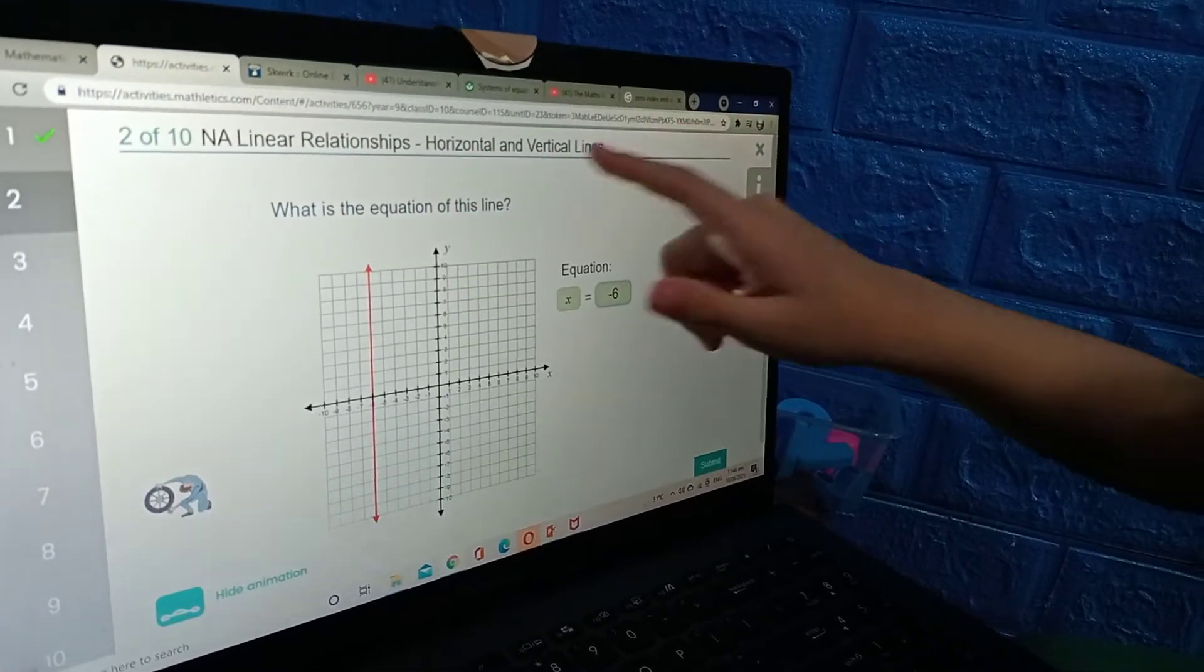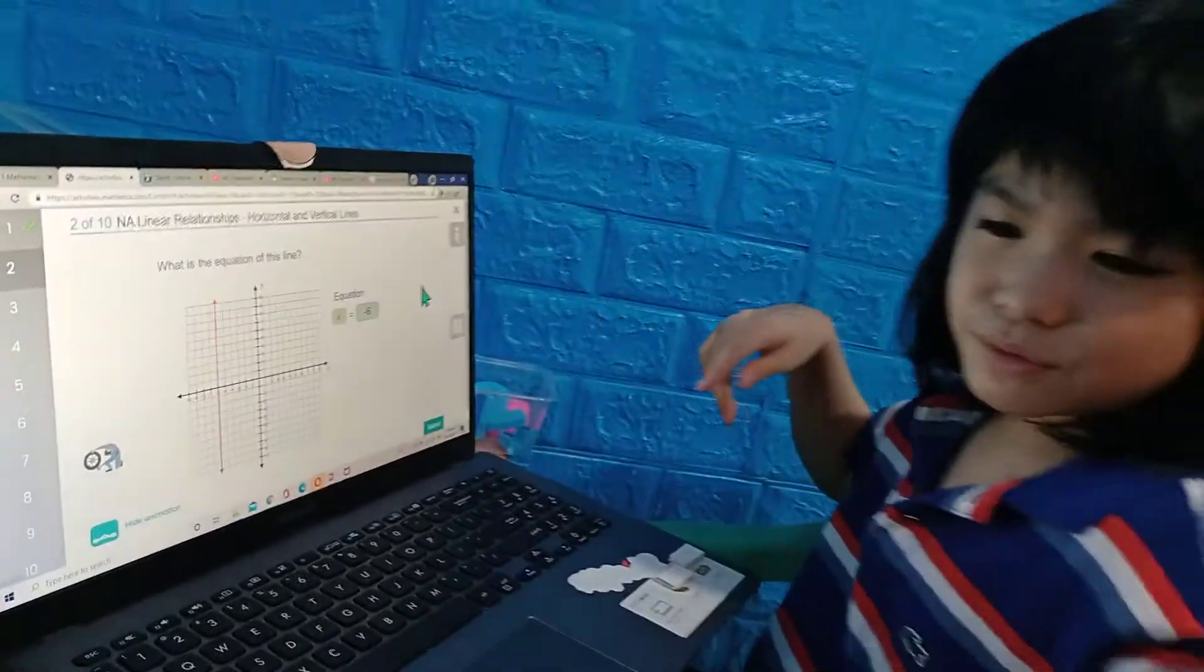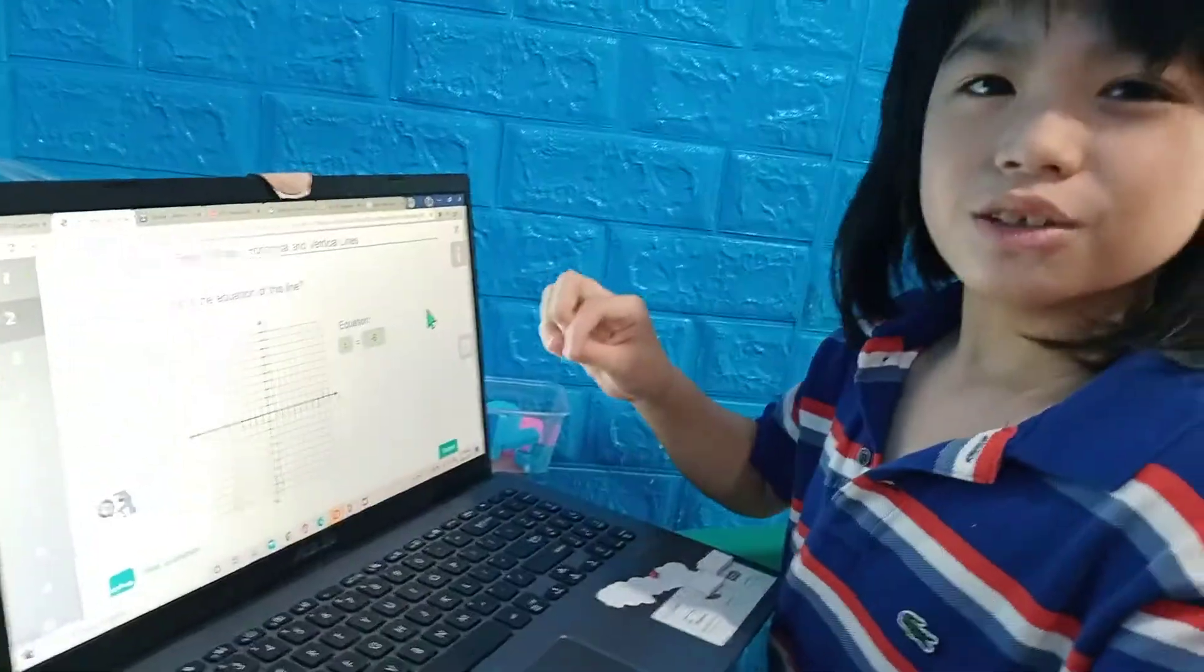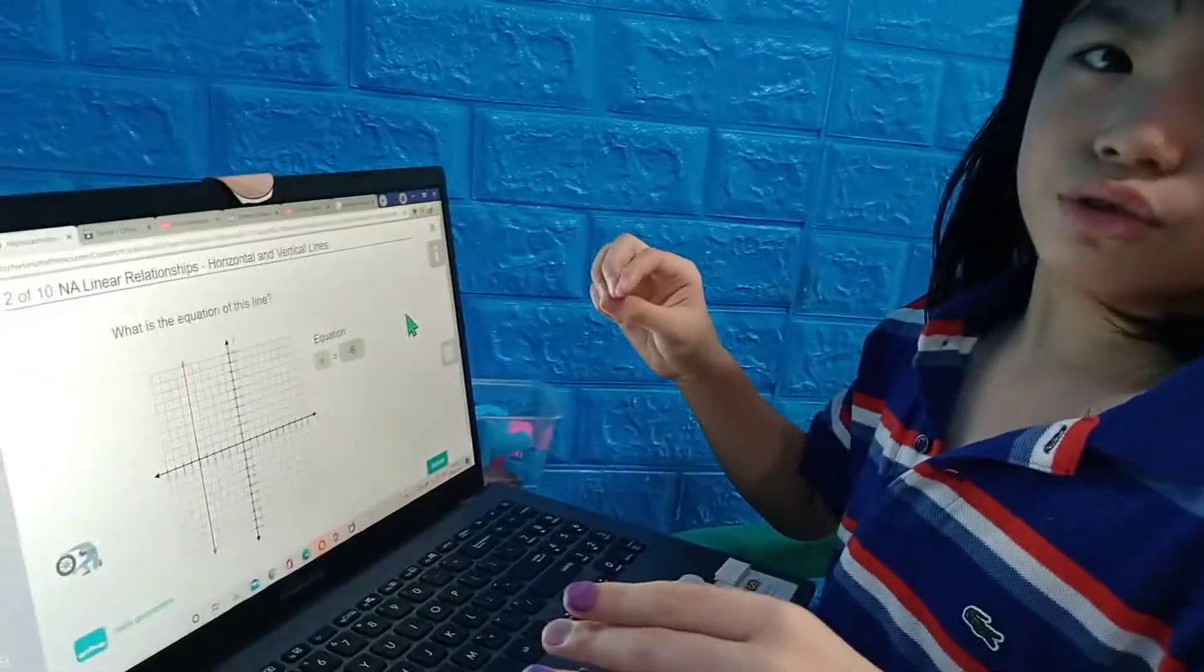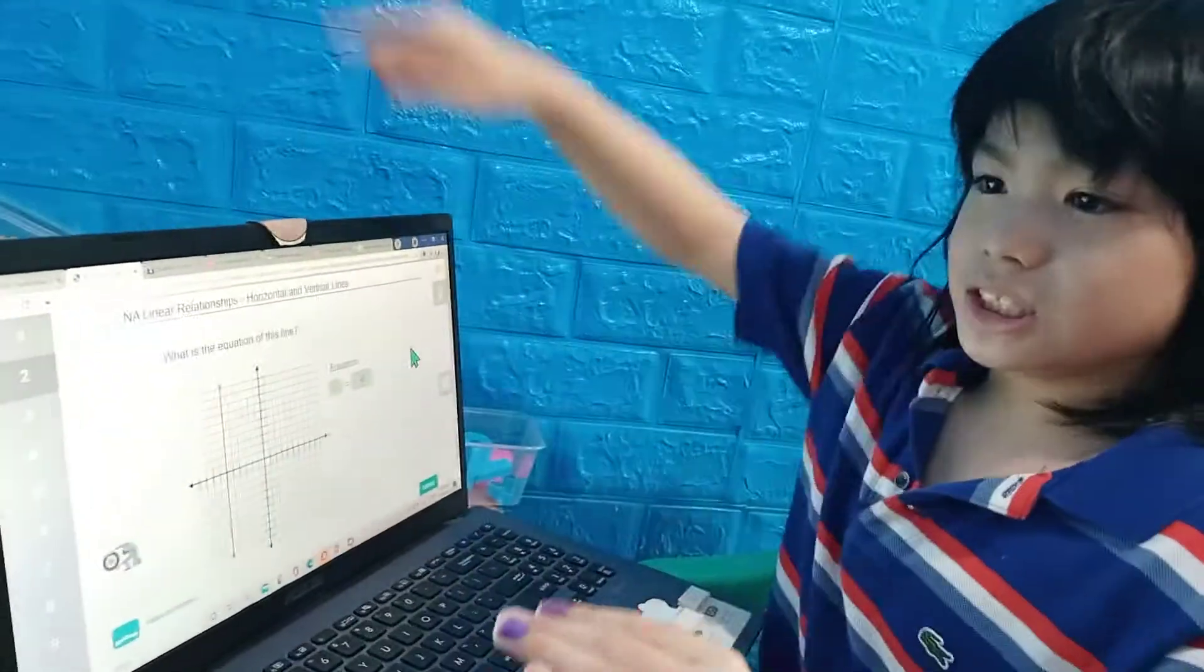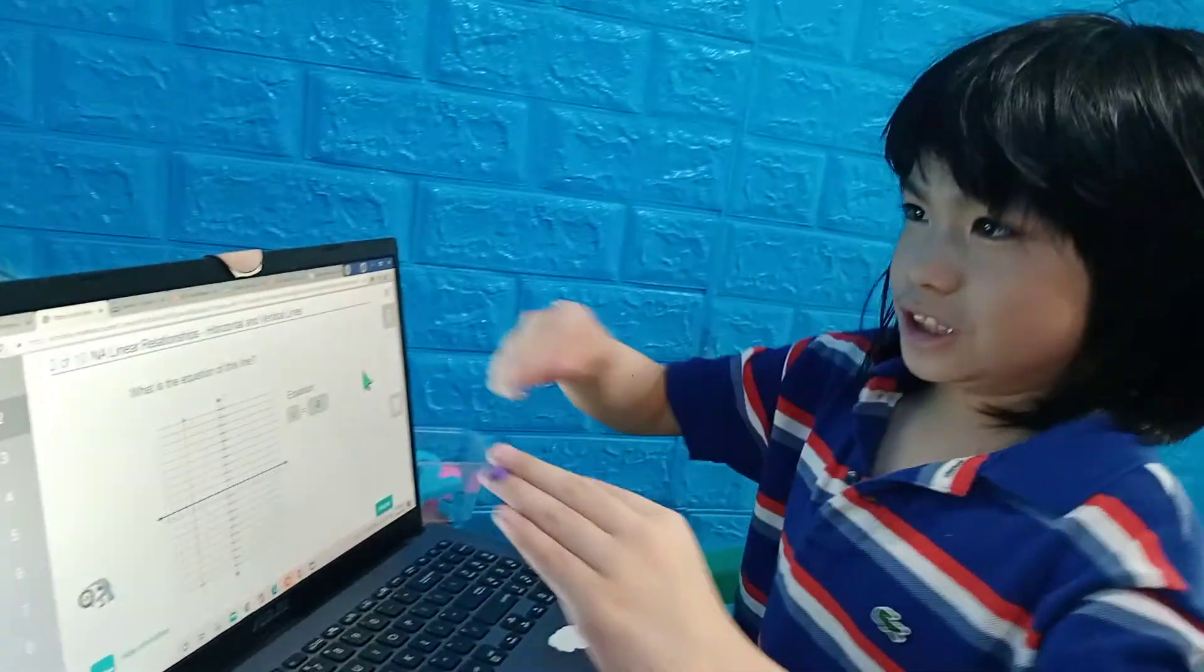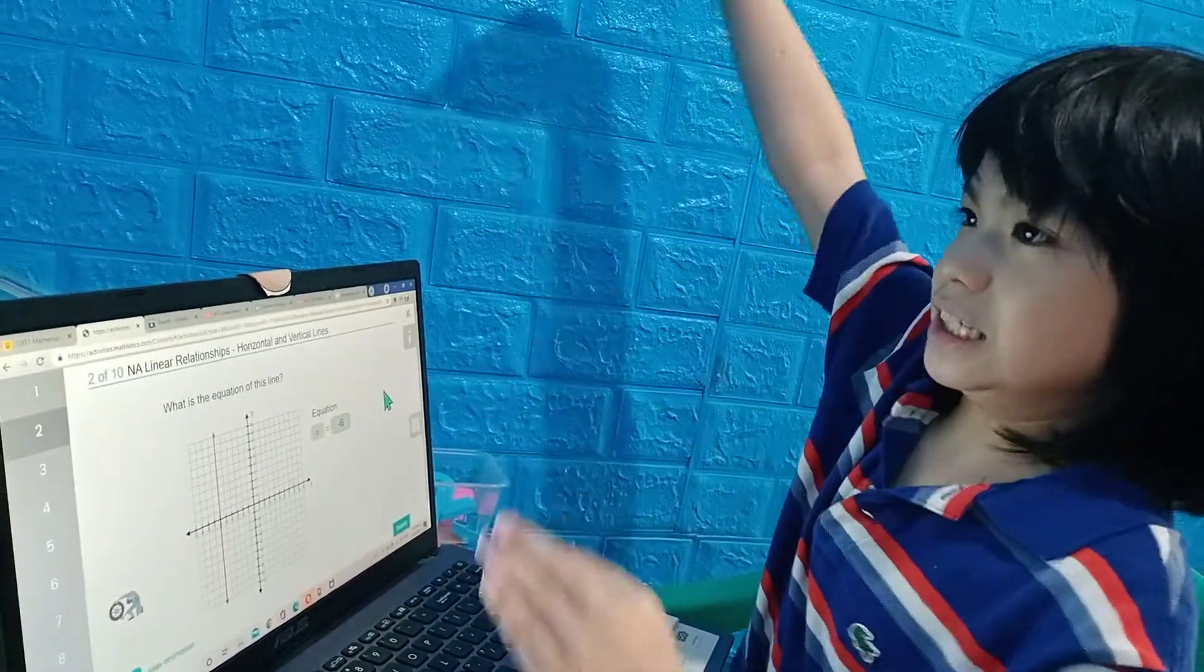So I've learned that y equals mx. For example, y equals 1x is just this example form. Y equals 0x is just a straight line. Y equals 1x is a diagonal line like this.